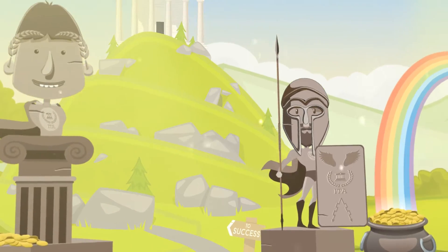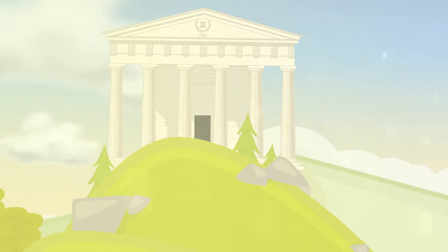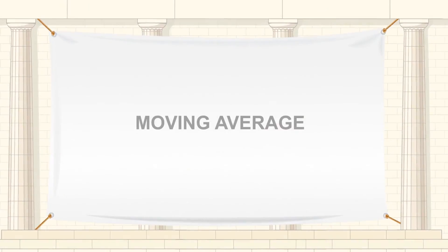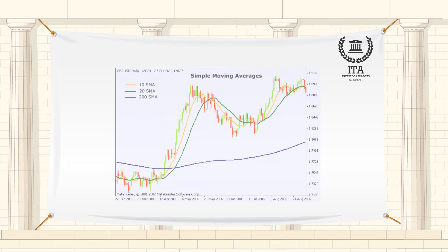Welcome to the Investors Trading Academy talking glossary of financial terms and events. Our word of the day is moving average. A moving average is one of the most flexible as well as the most commonly used technical analysis indicators. It is highly popular among traders, mostly because of its simplicity. It works best in a trending environment.